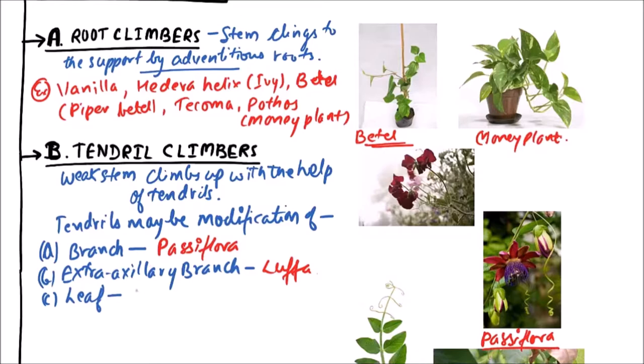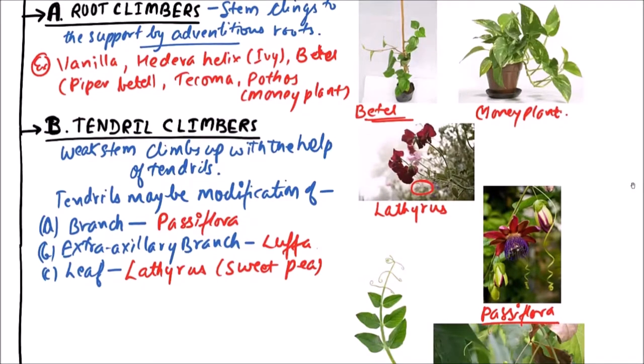These tendrils may be modification of leaf. This can be observed in Letharis. Letharis odoratus is sweet pea. This is sweet pea. This is Letharis. We can observe the tendrils here. In Passiflora the tendrils can be easily observed.